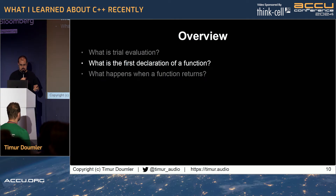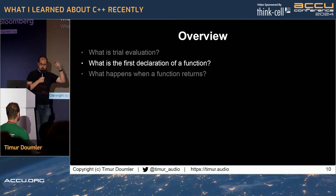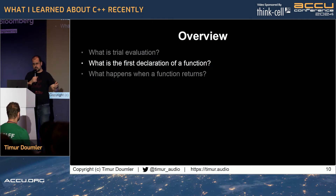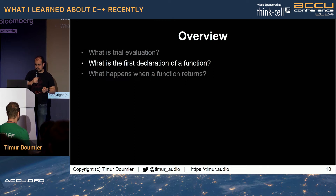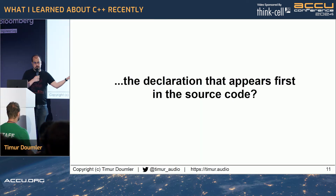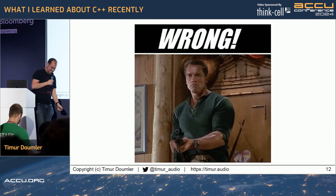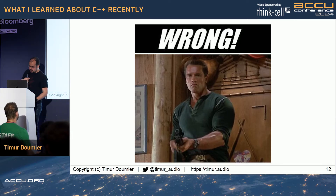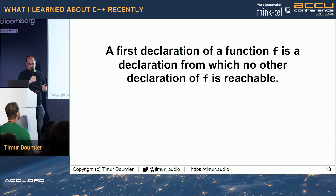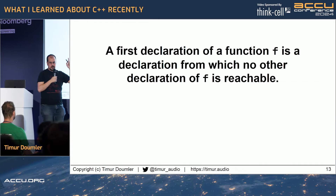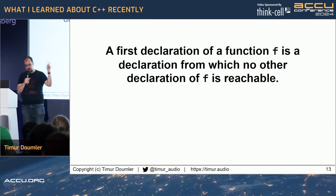Next: what's the first declaration of a function? You want to put pre- and post-condition specifiers on the first declaration — you might put them on non-first declarations too, but you must put them on the first. So you need to figure out what the first declaration is. You'd think the first declaration is the one you wrote first — no. With modules, the only reasonable definition is: a first declaration is one from which no other declaration is reachable, and reachable is a term tied to modules, quite complicated.